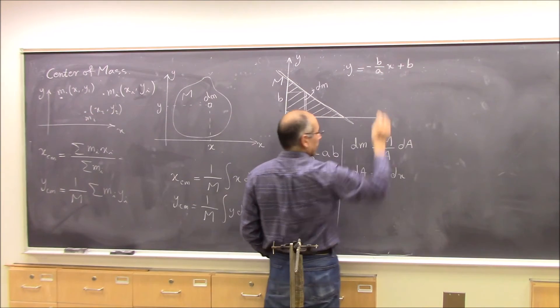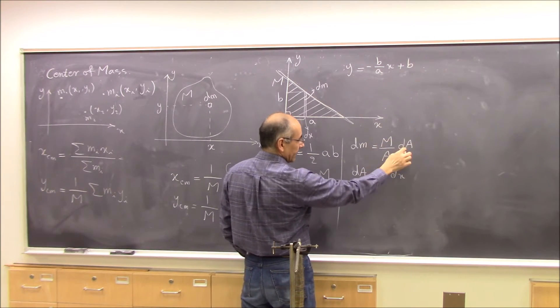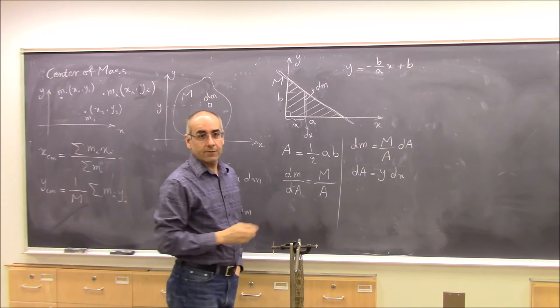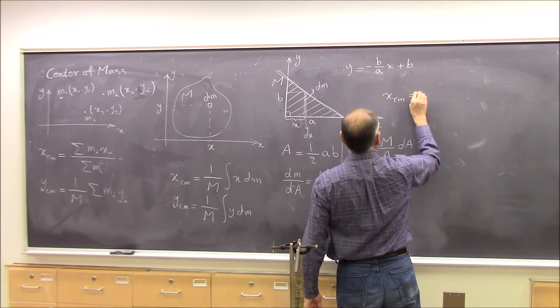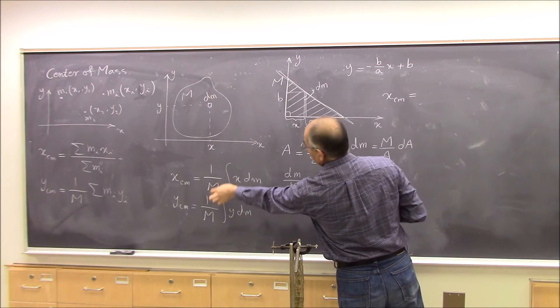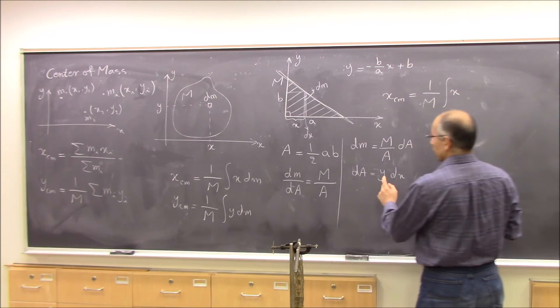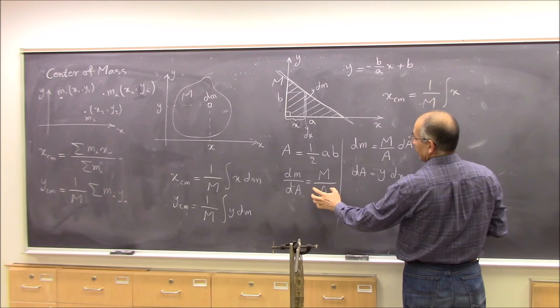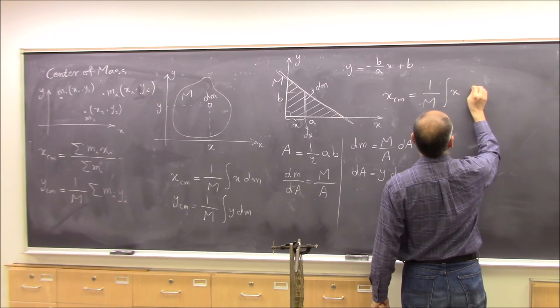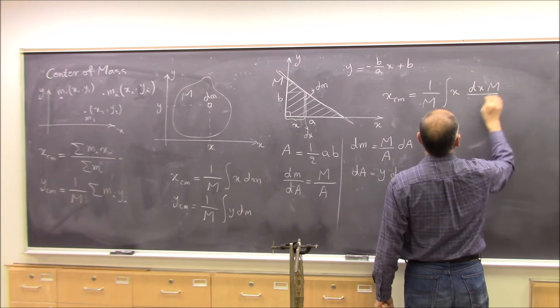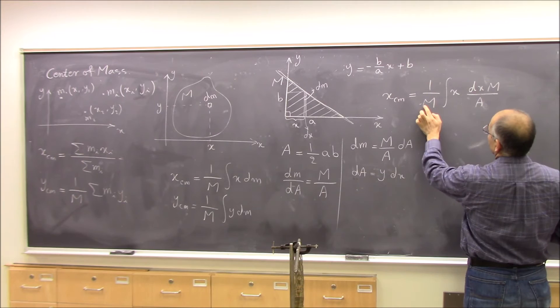So y is that, and then da is y dx, so you multiply that by dx, and dm is M over A da. All right? So you have everything to set this integral up. So x of center of mass, if I write in terms of da, what do I get? Get 1 over M, integral of x dm, dm is M over A da. And instead of dm, I write dx times M over A, from this equation, dm is M over A times da, and M comes out and cancels out.